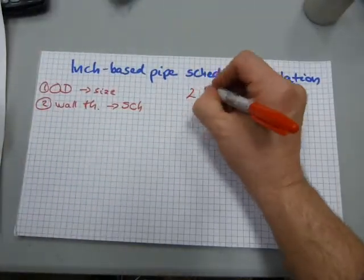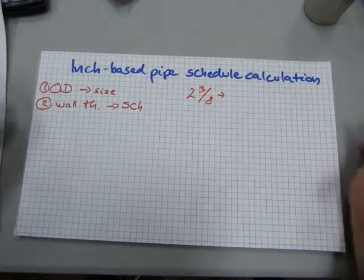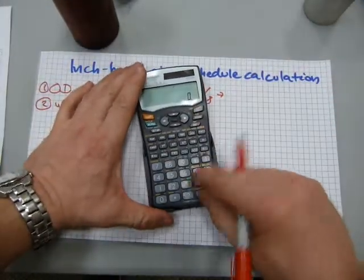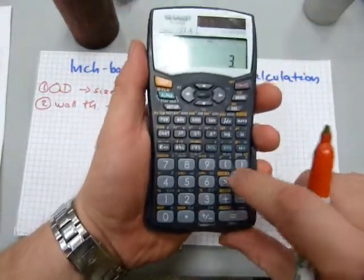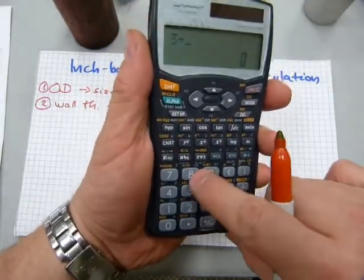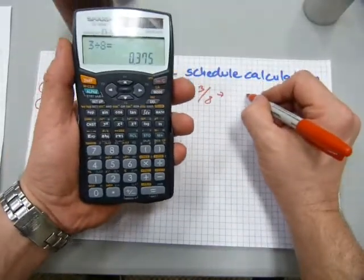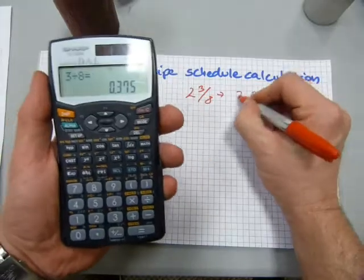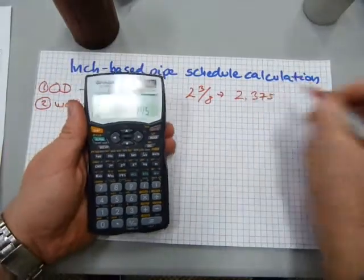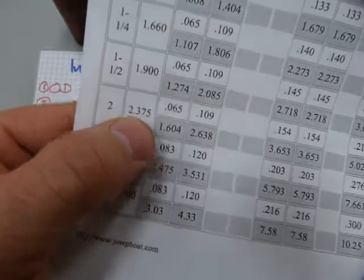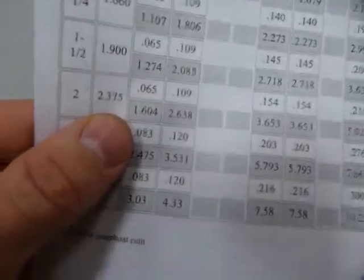So first convert your measurement two and three eighths. Three eighths converts like this: three divided by eight is 0.375, and the two inches is that. So we need to look for a number that resembles 2.375. Let me see, 1.6, 2.375 - we have a hit.